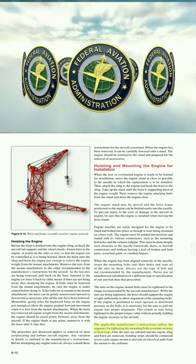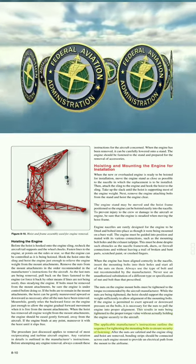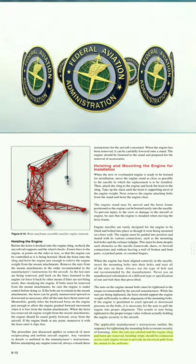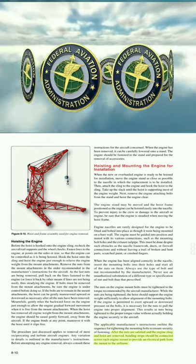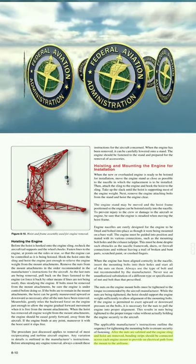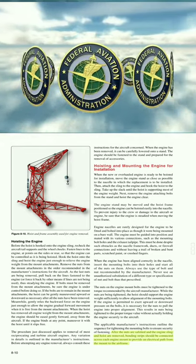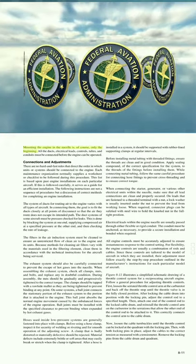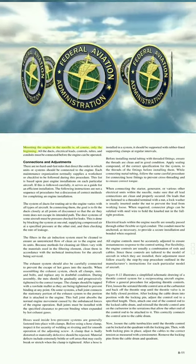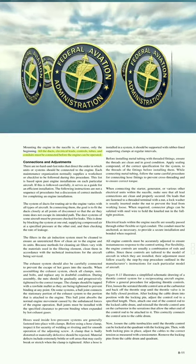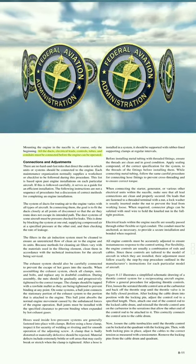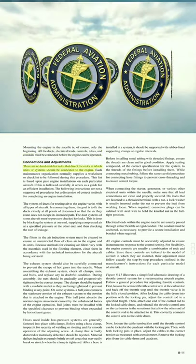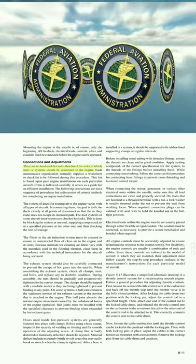The applicable manufacturer's instructions outline the sequence for tightening the mounting bolts to ensure security of fastening. After the nuts are safetied and the engine sling and hoist are removed, bonding strips should be connected across each engine mount to provide an electrical path from the mount to the airframe. Mounting the engine in the nacelle is only the beginning — all the ducts, electrical leads, controls, tubes, and conduits must be connected before the engine can be operated.